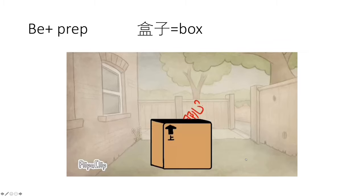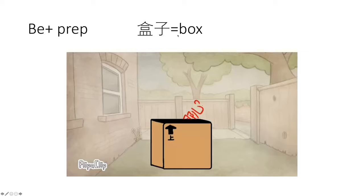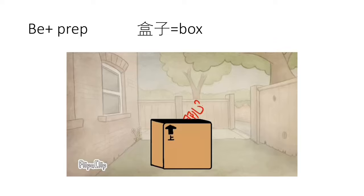Let's look at a little video to learn about zài's second meaning — be plus preposition. In this video, you might not know every word, but 盒子 means 'box'. After this video, you might learn all these location words because it shows you very clearly.